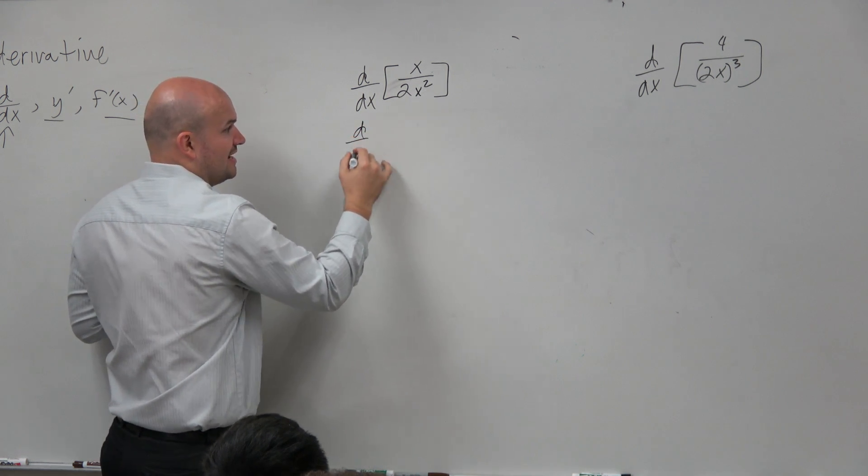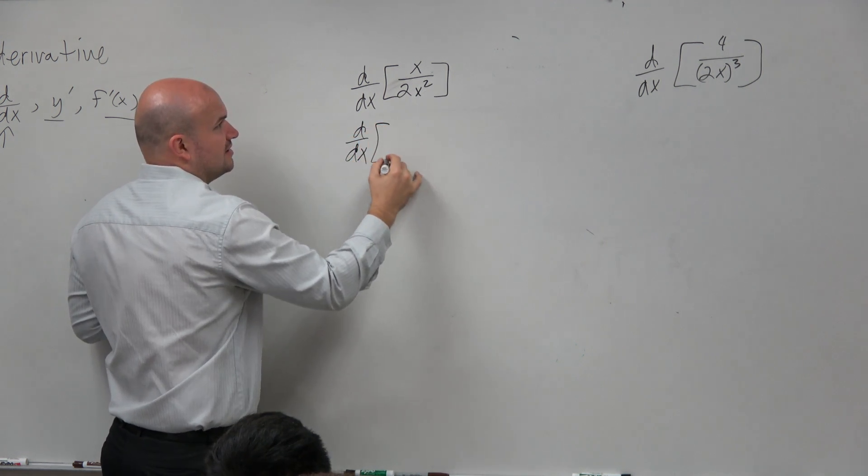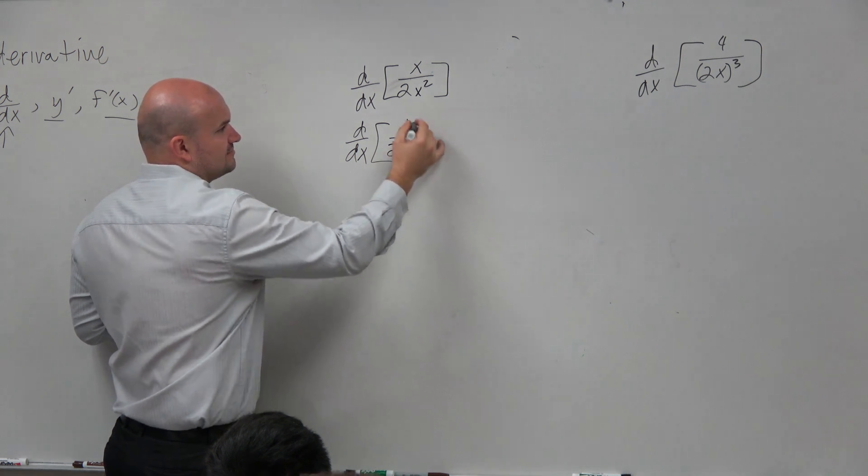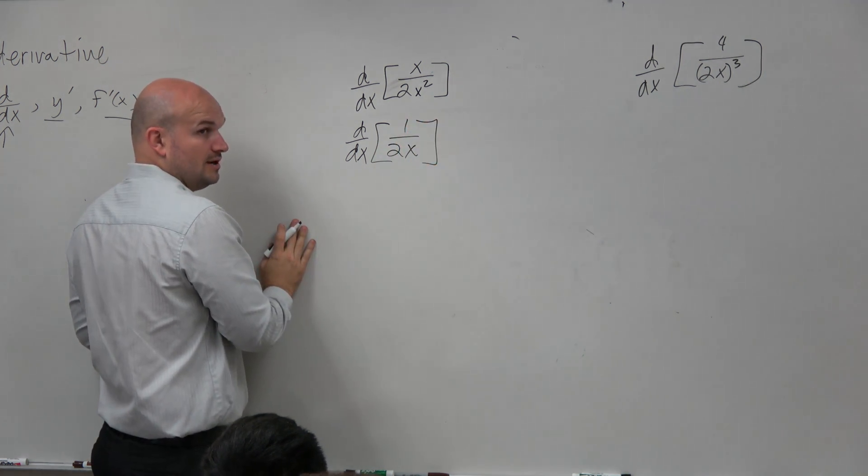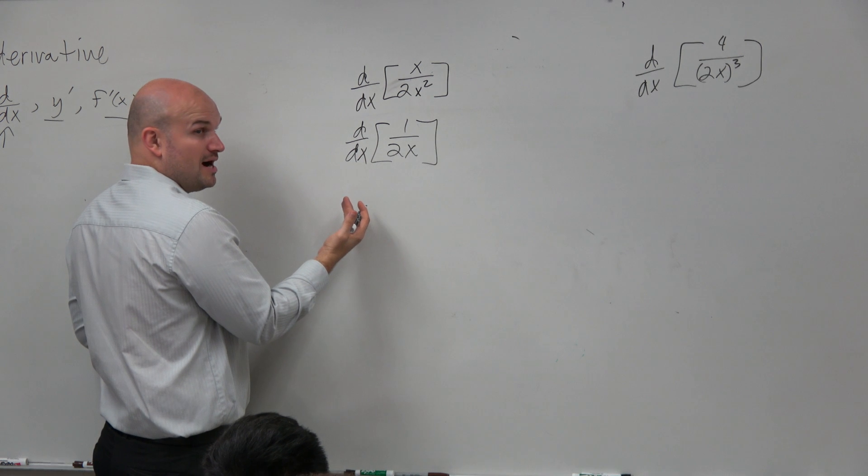So I can rewrite that as d/dx of 1 over 2x. Now I want to use the power rule.